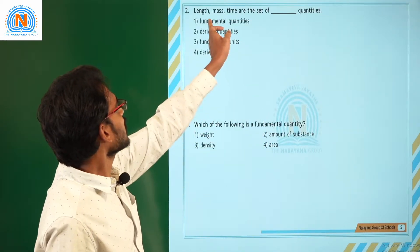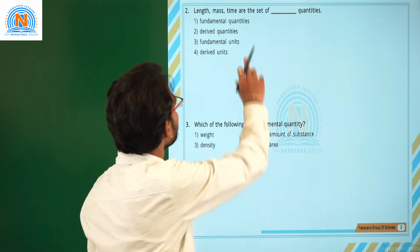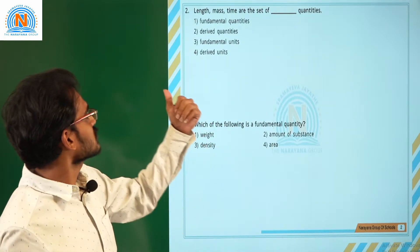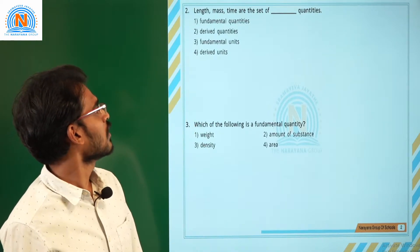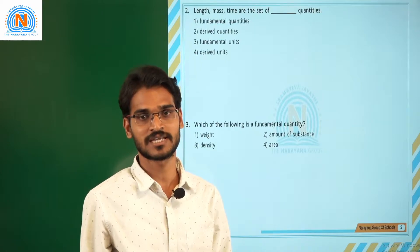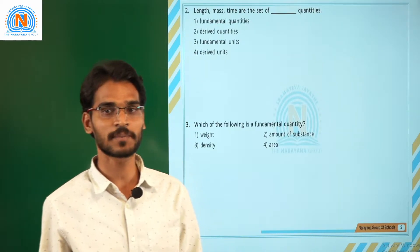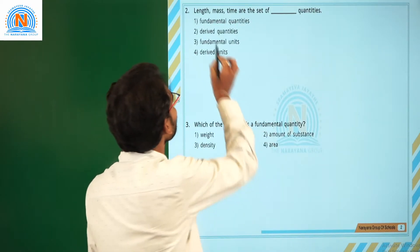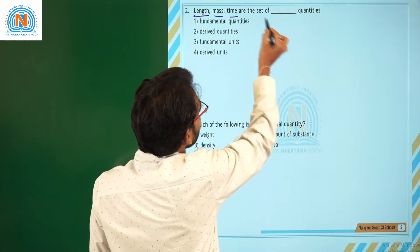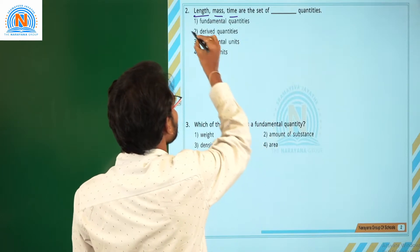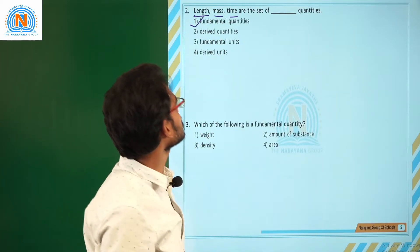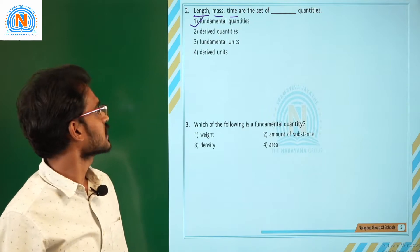Here, the options mentioned are length, mass, time, or a set of physical quantities. As explained in the previous question, length, mass, time, electric current, temperature, and amount of substance are the fundamental physical quantities. Length, mass, and time are independent of remaining other quantities, that's why we can call them fundamental physical quantities.